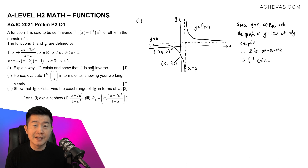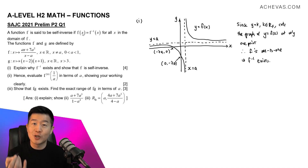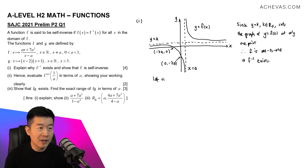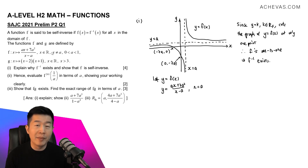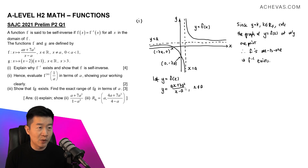Next, we want to try to show that f is self-inverse. According to the question, when a function is self-inverse, then f equals f inverse. So let's find the expression of f inverse by letting y equal f(x). So y equals ax plus 7a squared, divided by x minus a, where x cannot equal a — this is the domain of the function f.